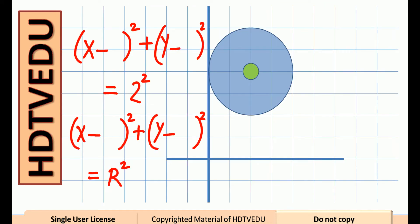When you compare x minus 2 squared plus y minus 4 squared equal to 2 squared with x minus h squared plus y minus k squared is equal to r squared,